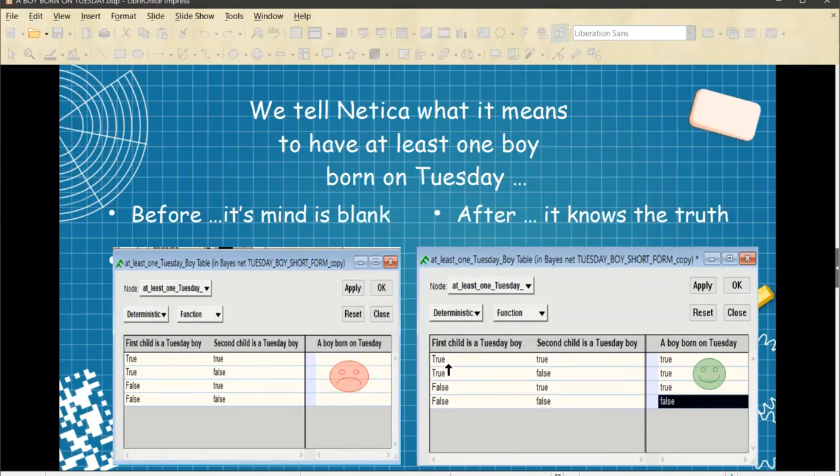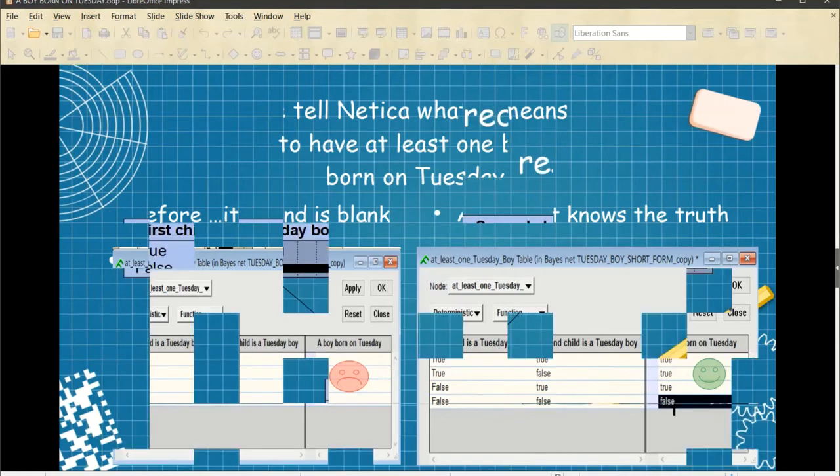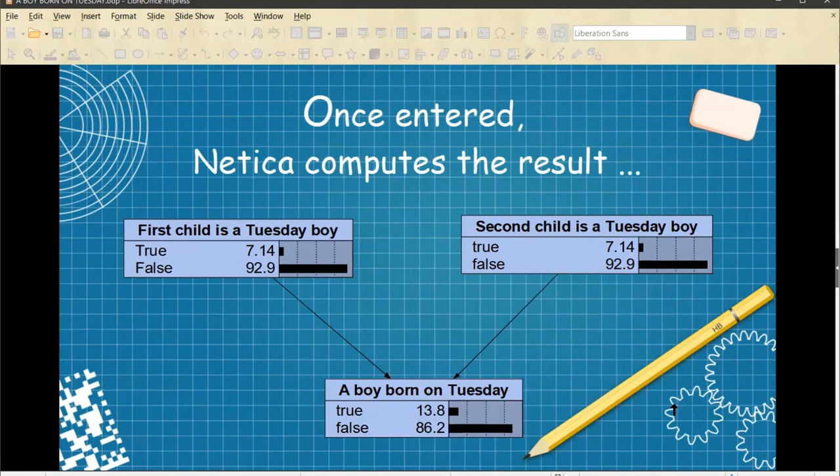We tell Nereka what it means to have at least one boy born on Tuesday. As before, its mind is blank. And after, it knows the truth. We say, if the first child is a Tuesday boy, and the second child is a Tuesday boy, then of course, it's true that there is a boy born on Tuesday. Similarly, if the first child is a Tuesday boy, but not the second child, still, there is at least one boy born on Tuesday, so on and so forth. If it's false, and that's false, then of course, that's false, there is no boy born on Tuesday. Once entered, Nereka computes the result. And from this and this, we get this.